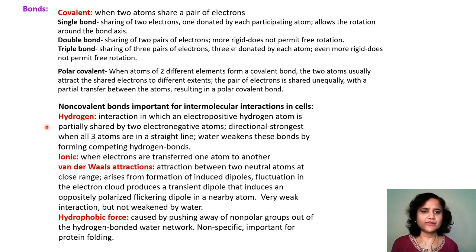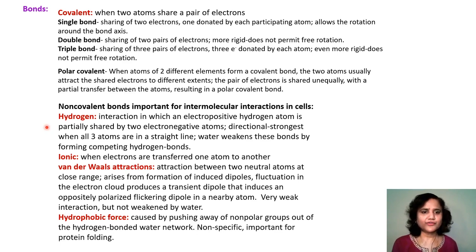Molecules are held to each other with non-covalent bonds inside cells. One important bond is the hydrogen bond, which results from an interaction in which an electropositive hydrogen atom is partially shared by two electronegative atoms. This is a directional bond — it is strongest when all three atoms are in a straight line, and it can be weakened by water because water can form competing hydrogen bonds.